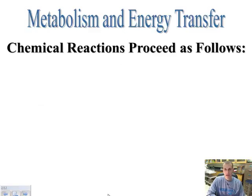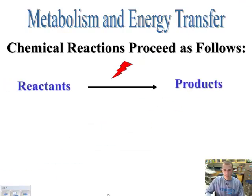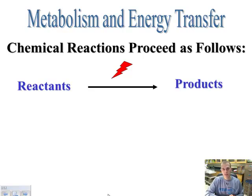So moving through this, basically metabolism and energy transfer. We talked about metabolism way back in the characteristics of life — basically those are the sum of all the chemical reactions that occur within your body. When we're talking about chemical reactions, you always have, in the beginning of the reaction, your reactants. It's kind of like if you're going to cook dinner or bake something — these are the ingredients that you have. And then you're going to need some type of energy or chemical to get the reaction going.